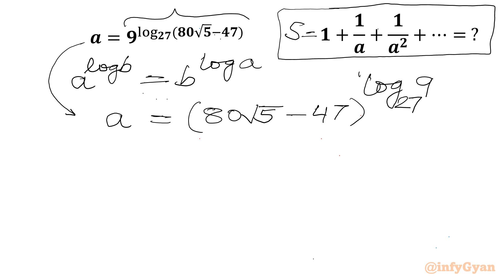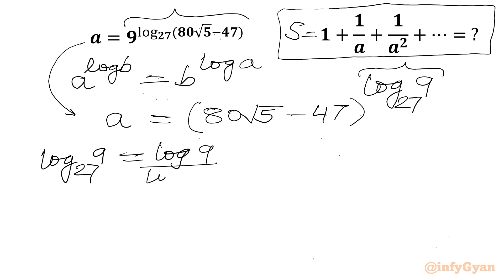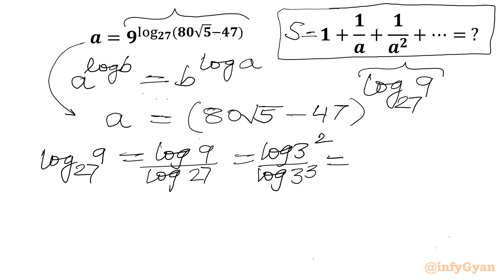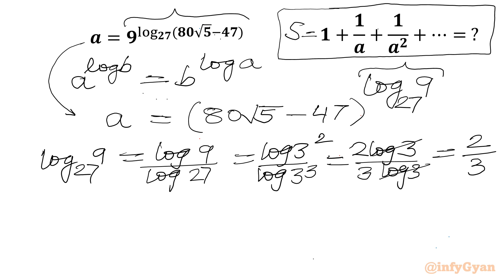Let us evaluate log 9 base 27 separately. Using the change of base formula, log a base b equals log a over log b. So 9 can be written as 3 squared and 27 as 3 cubed, giving 2 log 3 over 3 log 3. The log 3 terms cancel, giving us 2 over 3.